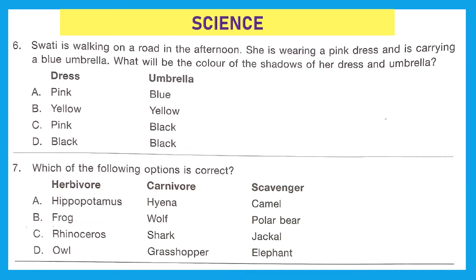The next section is Science. Question 6: Swati is walking on a road in the afternoon wearing a pink dress and carrying a blue umbrella. What will be the color of the shadows of her dress and umbrella? This is a tricky question because the color of a shadow is always black, regardless of the object's color. Option D is the right answer.